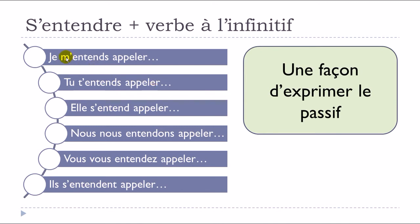Remember, it's a way to express the passive form. You only need to remember the conjugation of entendre at the present form. And as it's a verbe pronominal, you add: m for je — je m'entends, tu t'entends, elle s'entend, nous nous entendons, vous vous entendez, ils/elles s'entendent. Then it's followed by the verb at the infinitive, so it's quite simple.